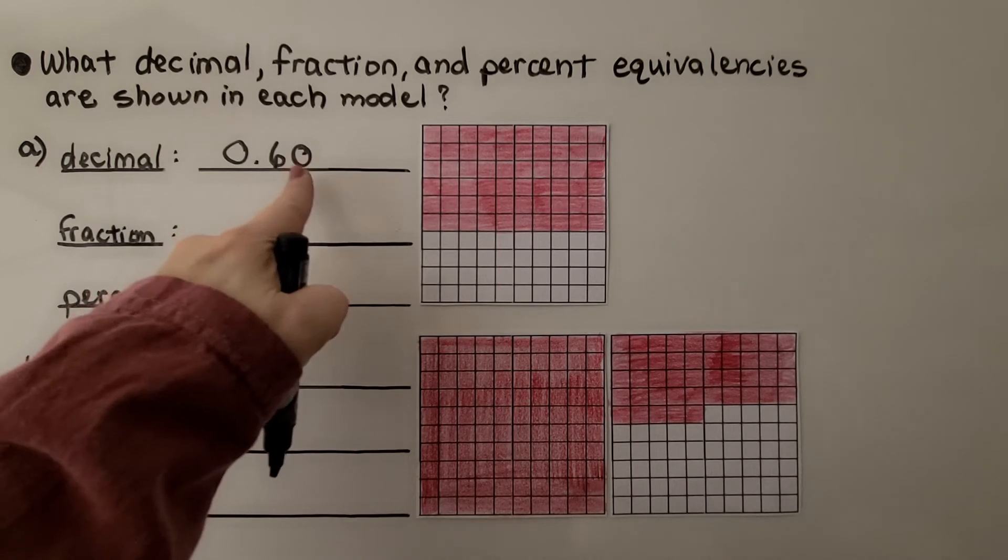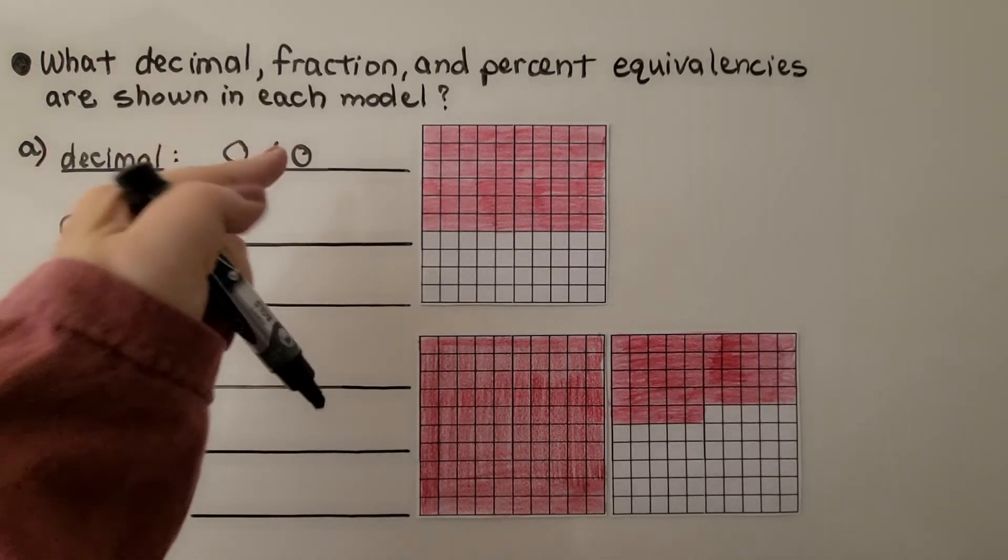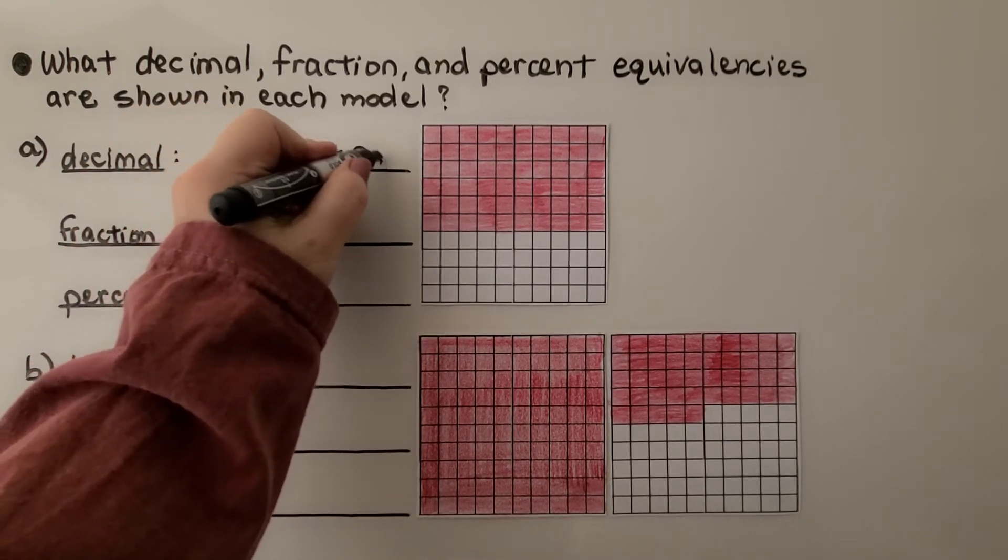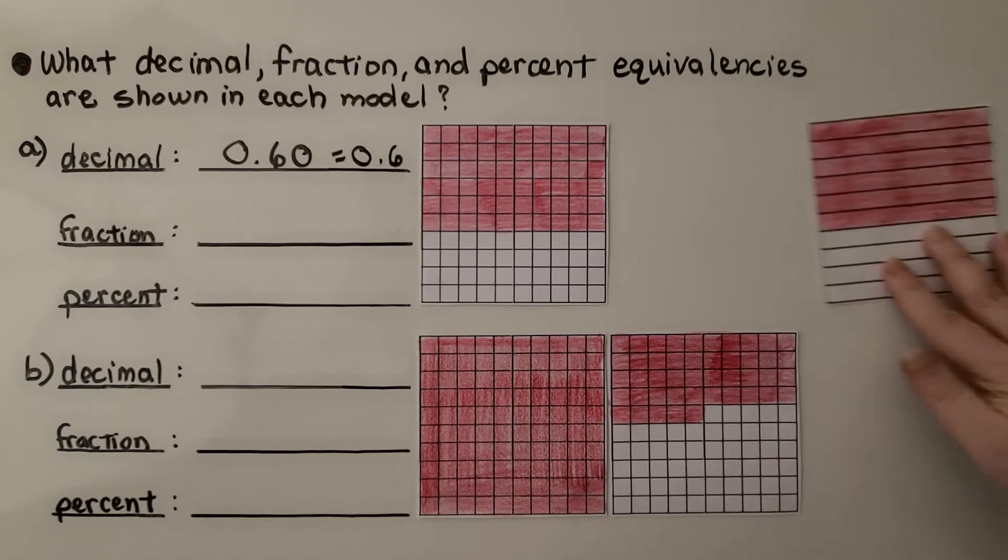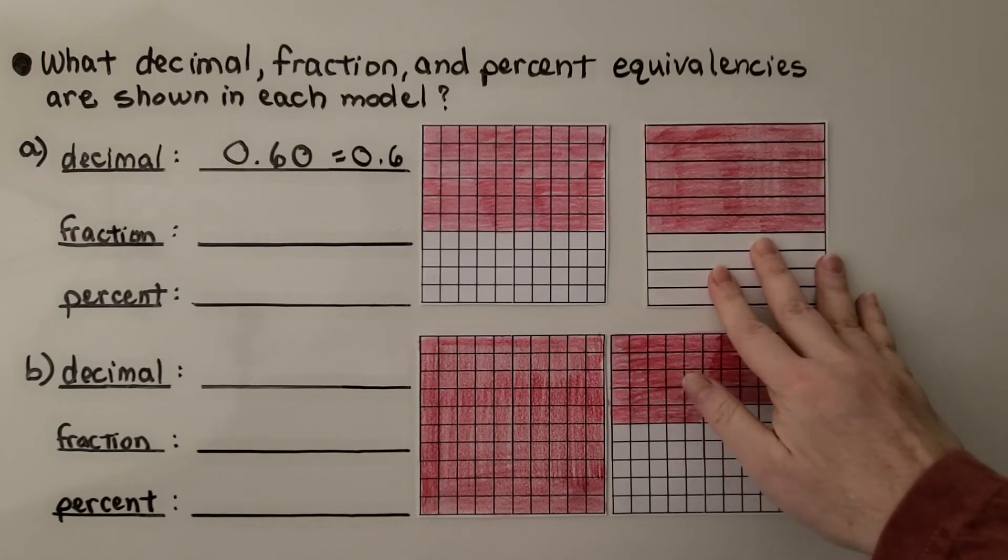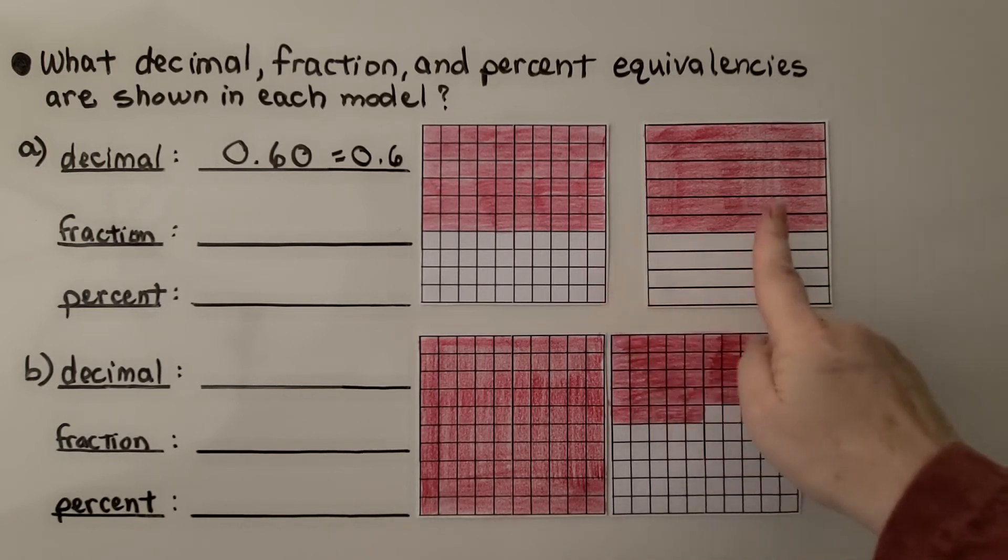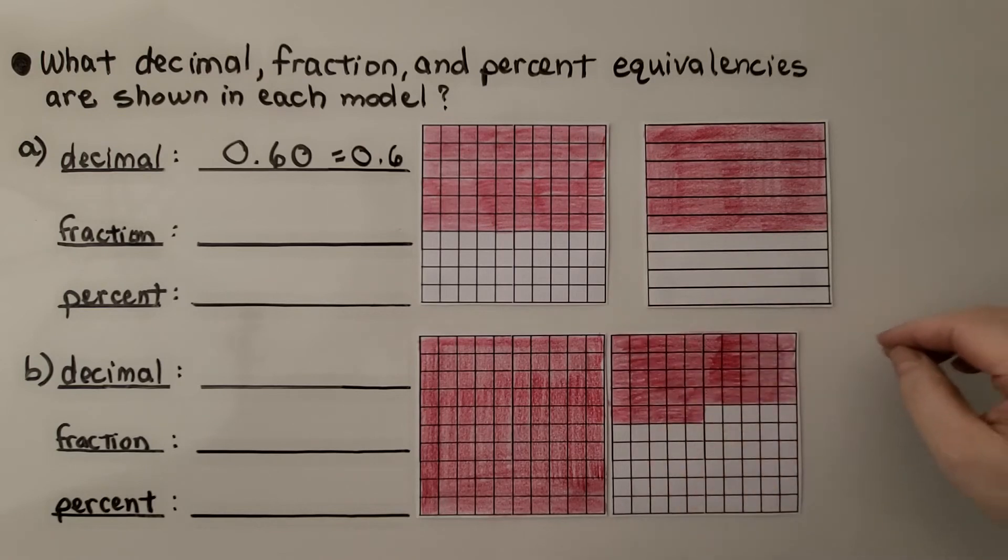And we also know that this 0 is unnecessary, isn't it, on the far right? We could also write this as 0.6 as 6 tenths because we could say it's actually 6 tenths. The same amount of area is covered in the same size grid. It's just that this is broken into tenths and this is broken into hundredths.